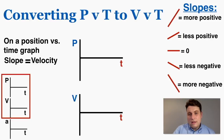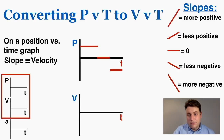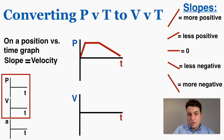You'll notice it doesn't matter what position you start from — all that matters is the slope. So these lines are at different positions, but they're all slopes of zero, so the velocity graph would just be zero the whole time. Now here's another graph: the position starts off very positive and constant, goes to zero and constant, and then goes negative and constant. So the velocity is also going to start very positive and constant, go to zero and flat, and then become negative and constant.